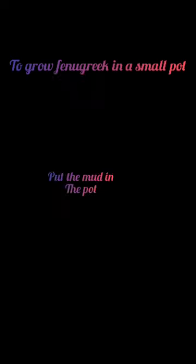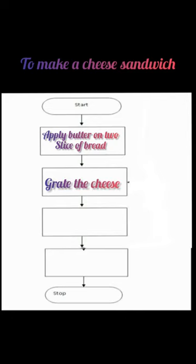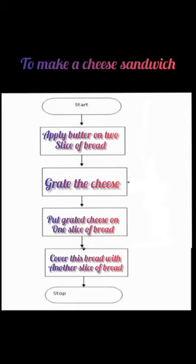Next, to make a cheese sandwich. Steps: first, apply butter on two slices of bread; second, grate the cheese; third, put grated cheese on one slice of bread; and fourth, cover this bread with another slice of bread.